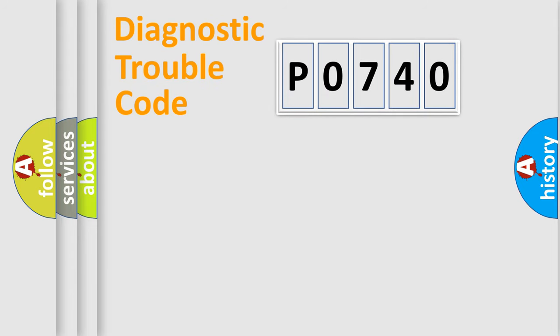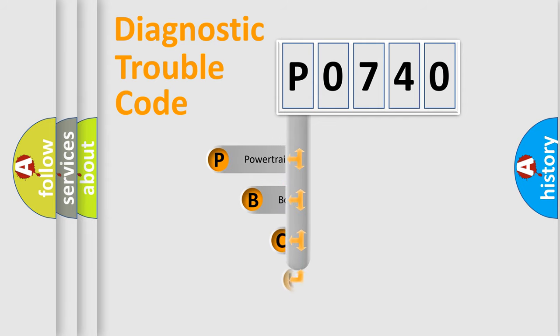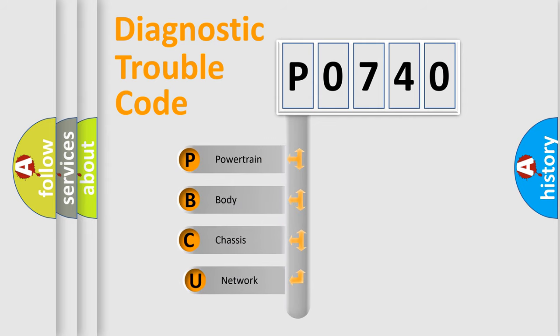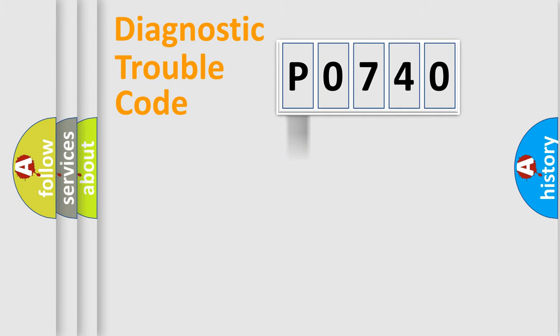Let's do this. First, let's look at the history of diagnostic fault code composition according to the OBD2 protocol, which is unified for all automakers since 2000. We divide the electric system of the automobile into four basic units: Powertrain, Body, Chassis, and Network.